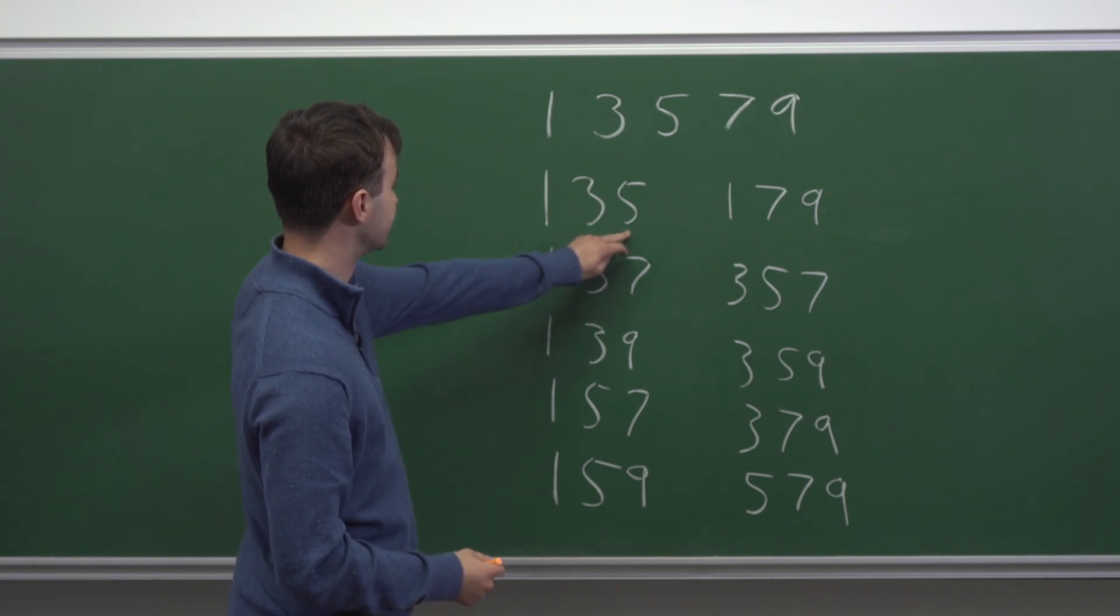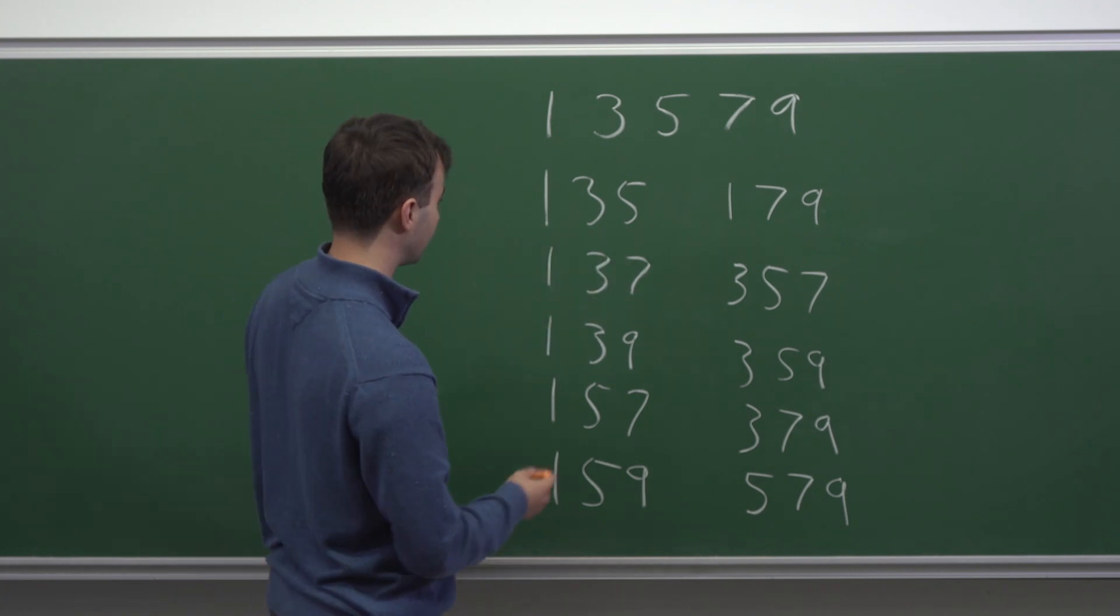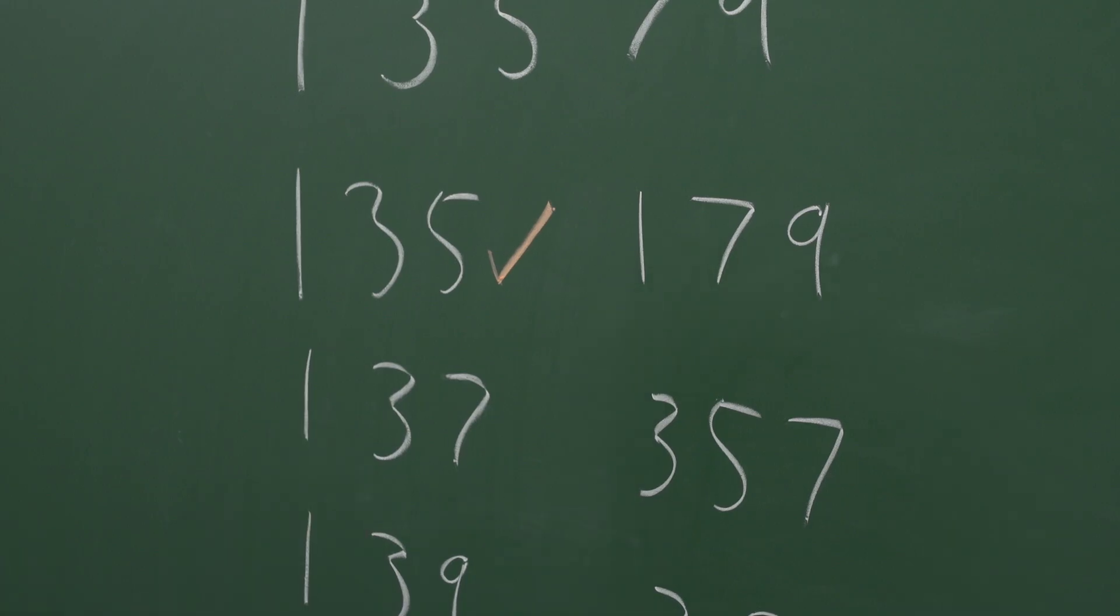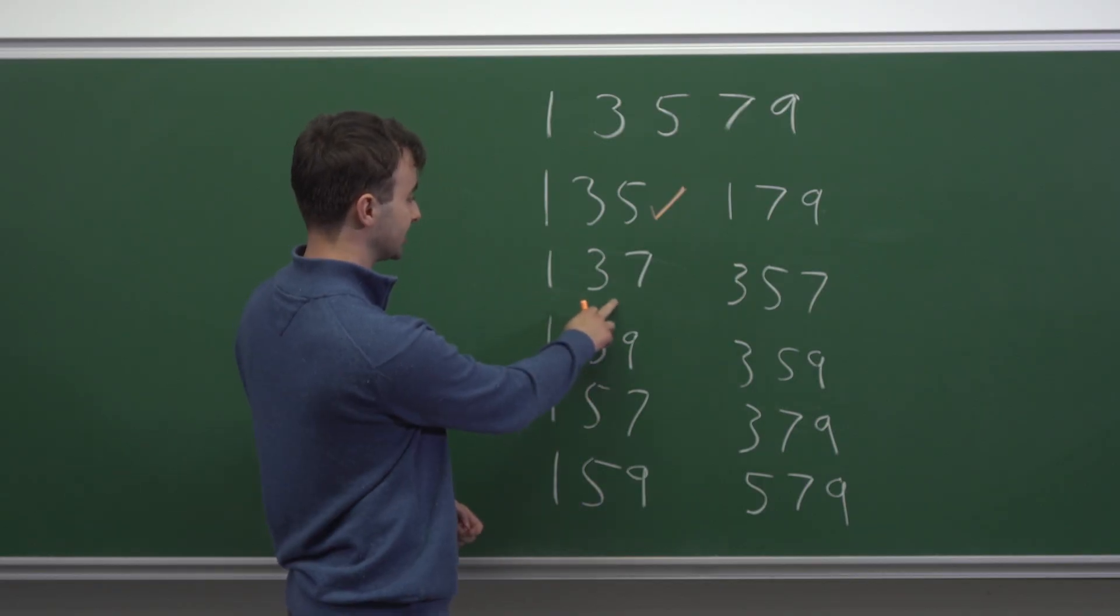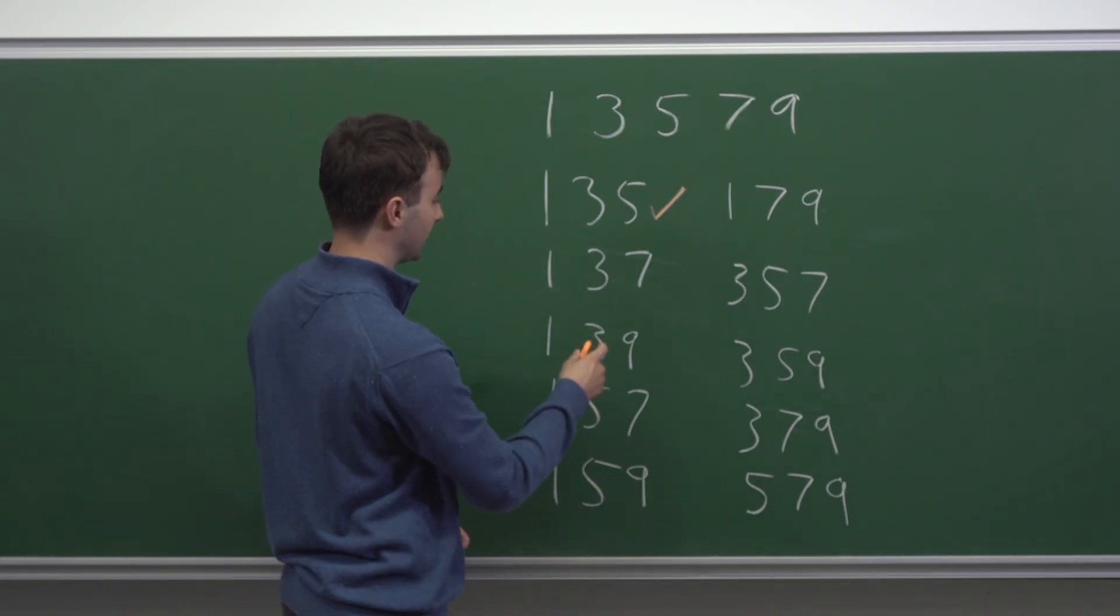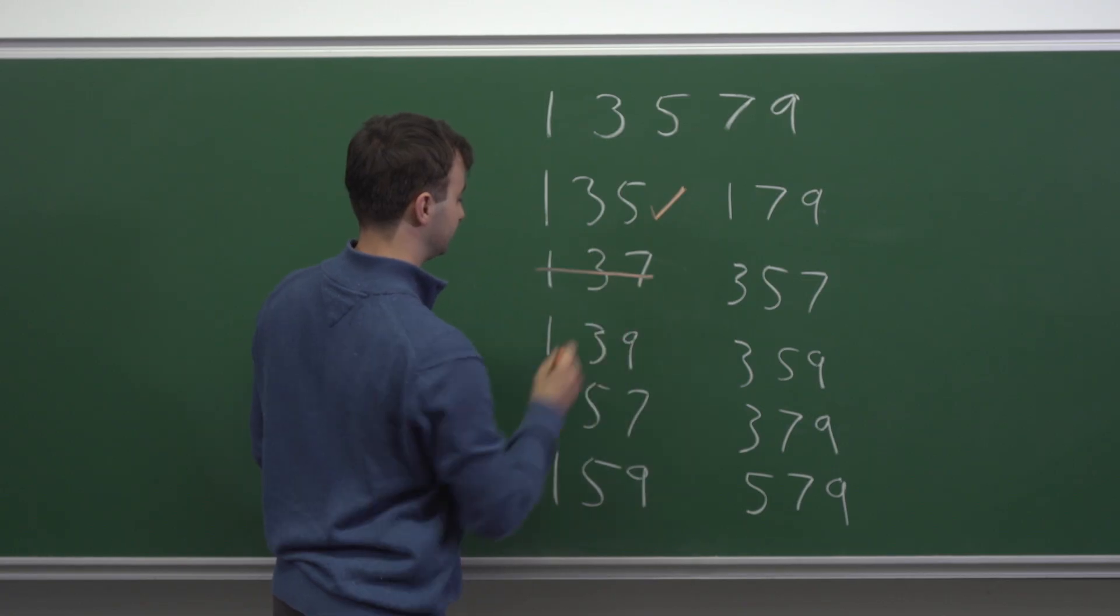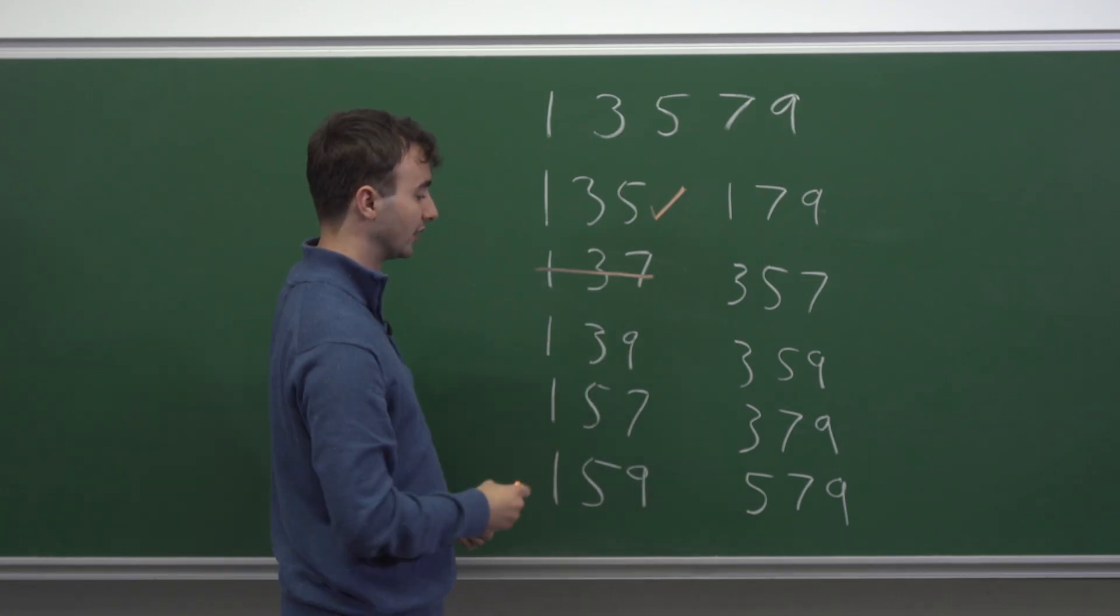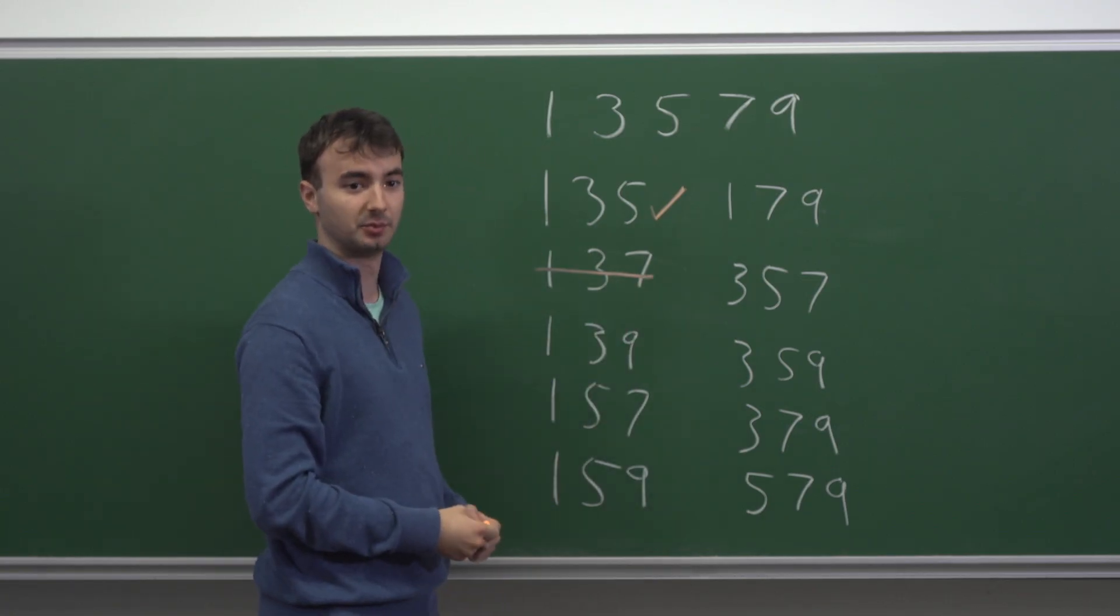135 has a digit sum of nine, so this is divisible by three. 137 has a digit sum of 11, which is not divisible by three, so that doesn't work. And we can go through the whole list, checking which ones have a digit sum divisible by three.